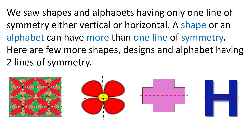You just saw shapes and alphabets having only one line of symmetry, either vertical or horizontal. A shape or an alphabet can have more than one line of symmetry. Here are a few examples of shapes, designs and alphabets having two lines of symmetry — one in black color, which is the vertical line of symmetry, and one in red color, which is the horizontal line of symmetry. If you fold these shapes along either line, the shapes will be symmetrical.